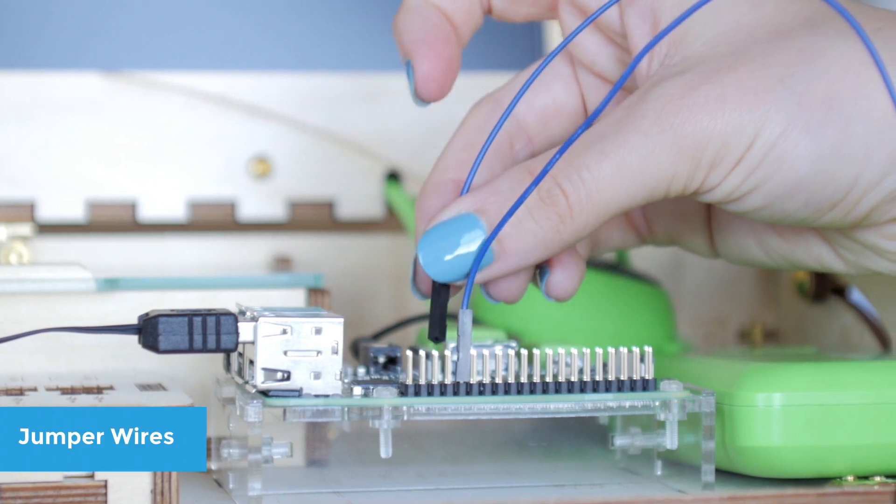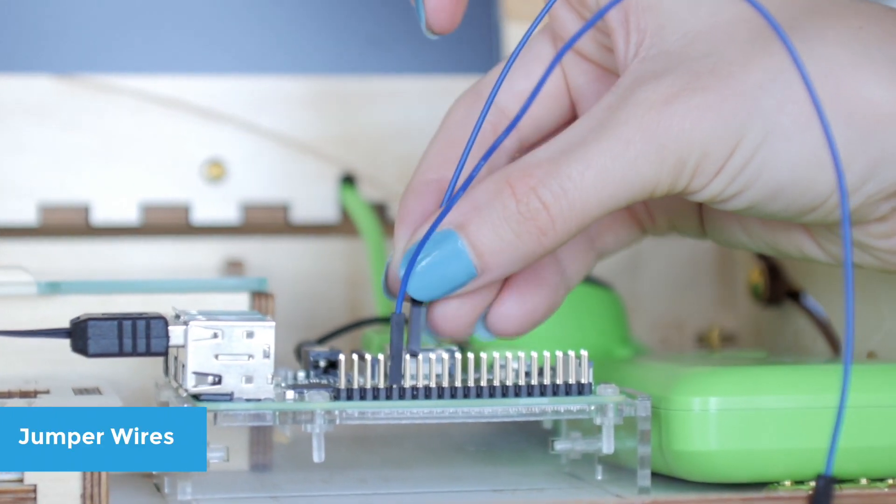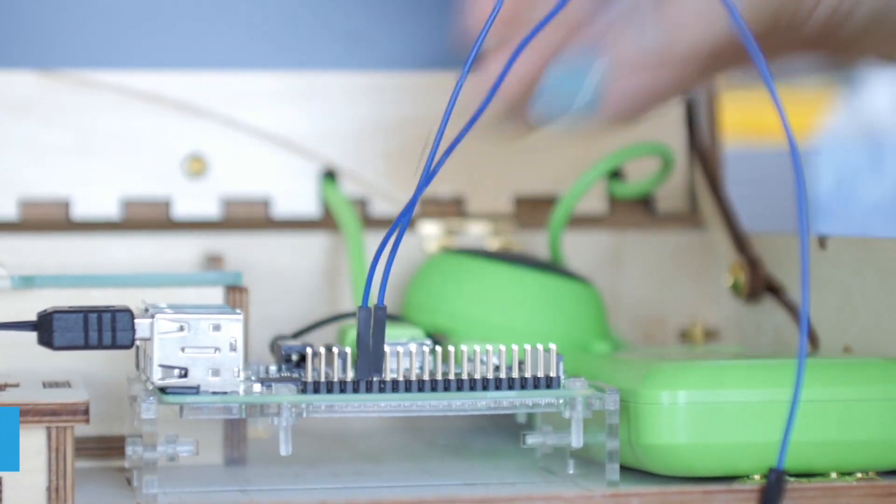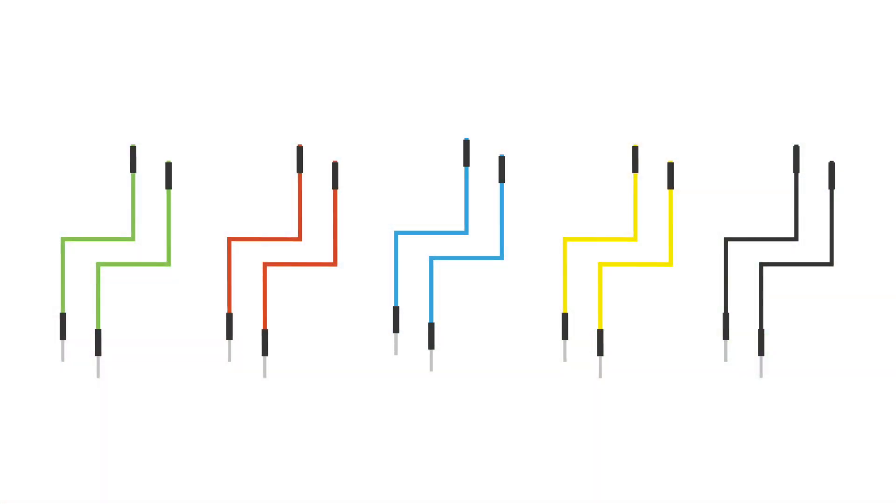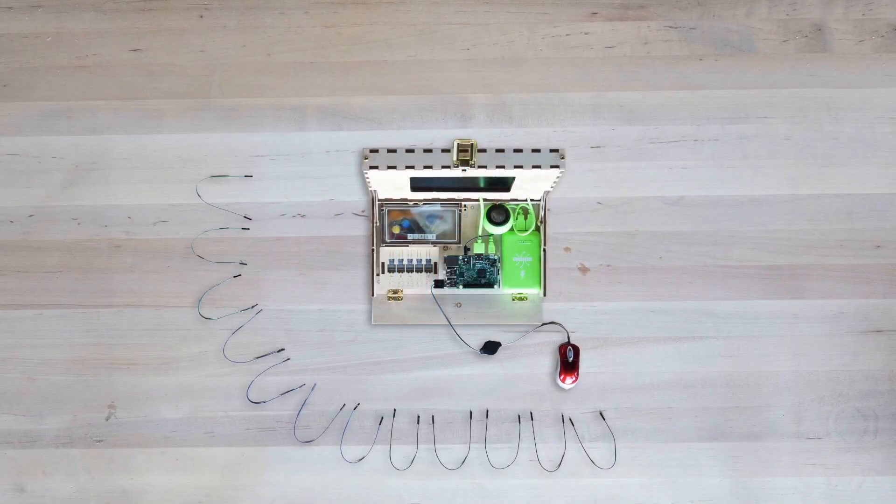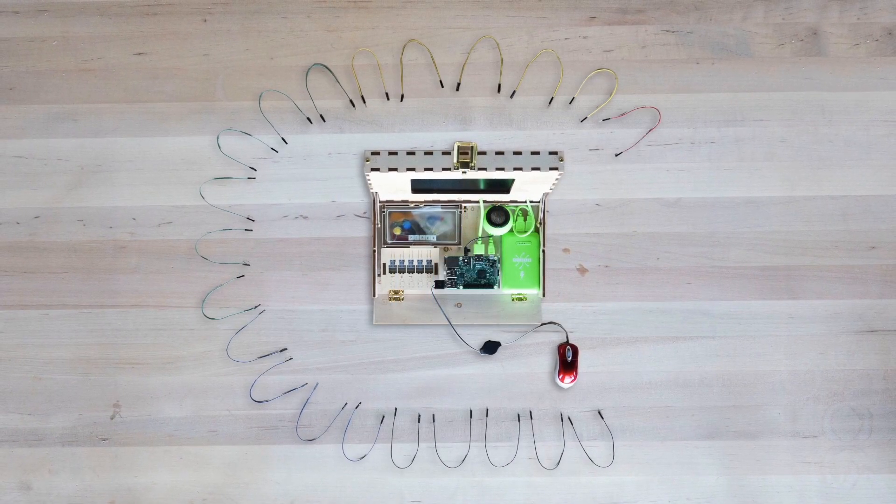Jumper wires. These wires are used to connect the GPIO pins to inputs and outputs in the breadboard. The colors allow you to stay organized, but they don't actually mean anything in terms of functionality.